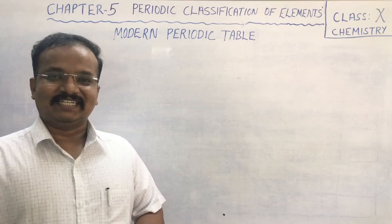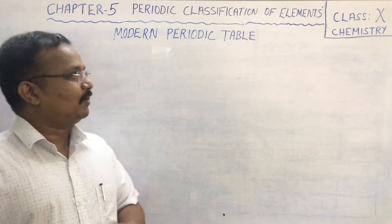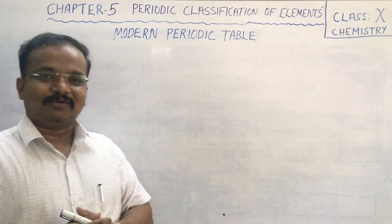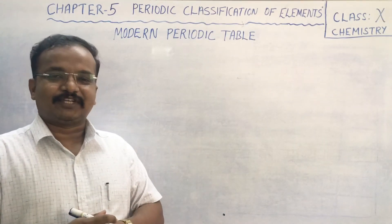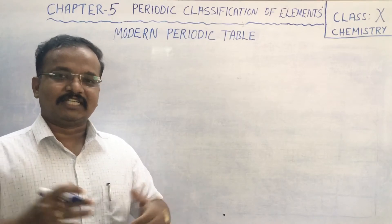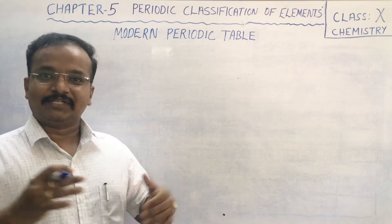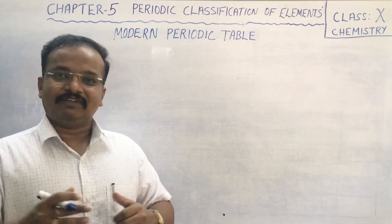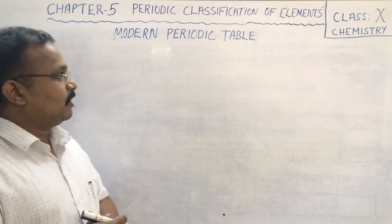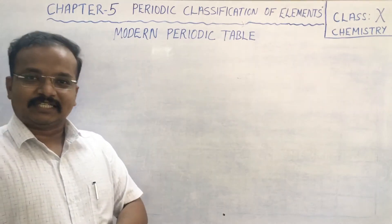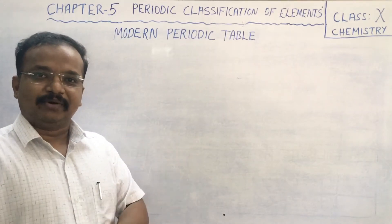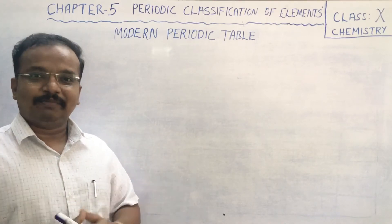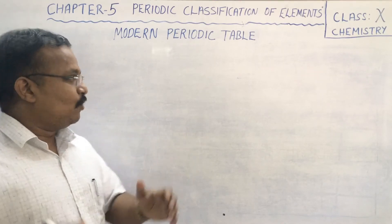Hello students, welcome back. Today we are going to discuss the modern periodic table. So far we have been discussing the history of classification — Dobereiner's triads, Newlands' law of octaves, and Mendeleev's classification of elements. Today we shall discuss the modern periodic table. We know that Mendeleev's periodic table was based on atomic mass.